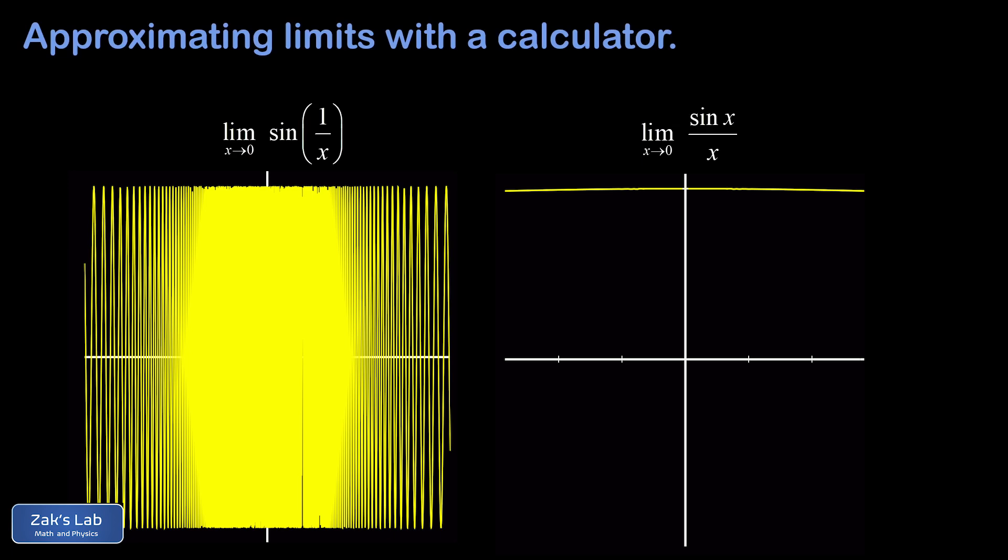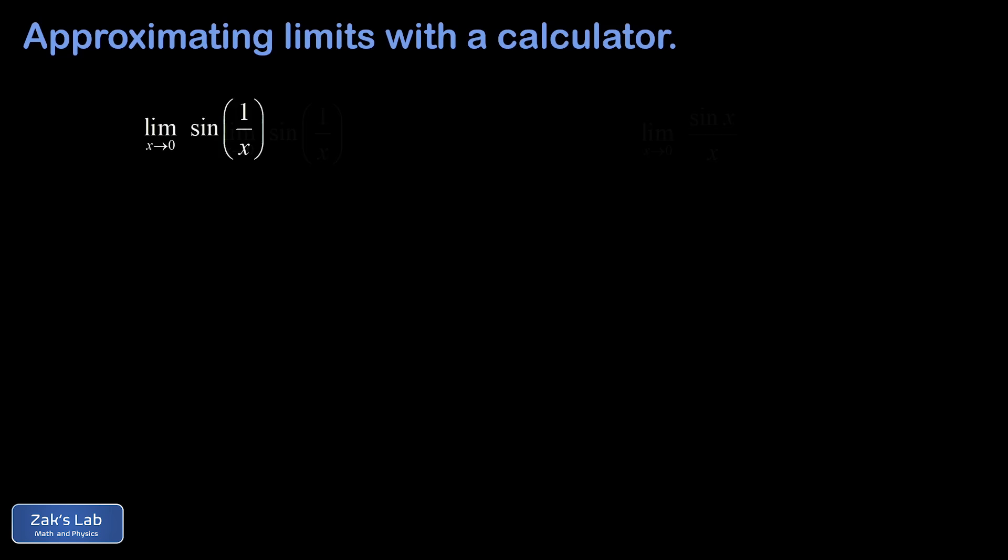So let's see if our numerical approach leads us to the same conclusions. The first limit we test numerically is the limit as x goes to zero of sine one over x. And to test this limit we're going to investigate the right-handed limit and left-handed limit and see if those exist and agree with each other.